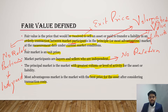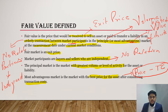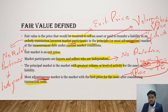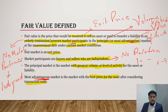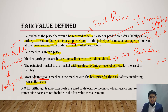To determine the most advantageous market, we calculate price minus transaction cost. For example, if one market has a price of 100 and transaction cost of 1, the net is 99, making it most advantageous. However, fair value should still be 100 — transaction costs are used only to determine the most advantageous market but are not included in the fair value measurement itself.